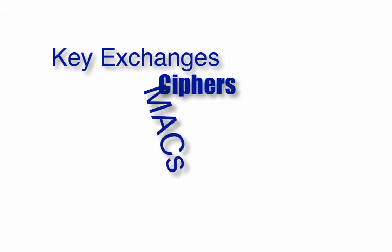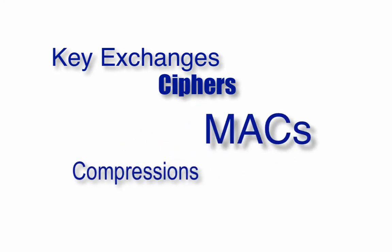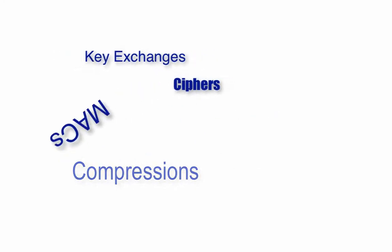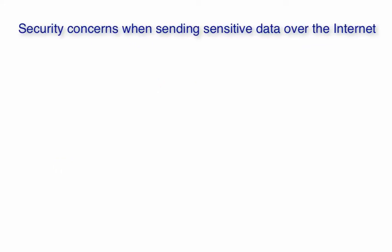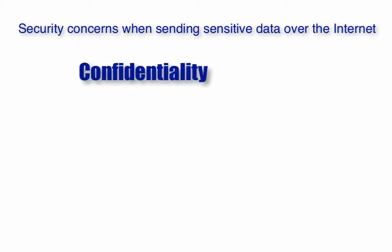Let's talk about key exchanges, ciphers, MACs, and compressions. Whenever you send sensitive files over an insecure network like the internet, you might want to make sure that your data stays confidential throughout the transmission. You wouldn't want valuable or sensitive information such as PII, trade secrets, customer lists, key employee salaries, marketing strategies, source codes, etc. to fall into the wrong hands.